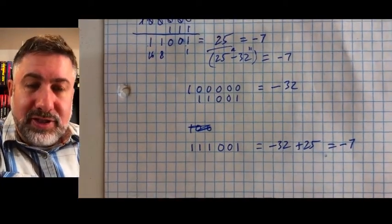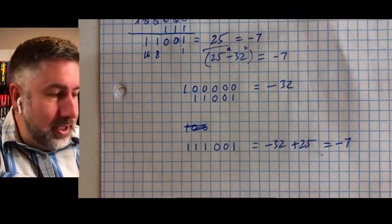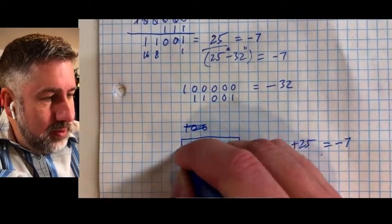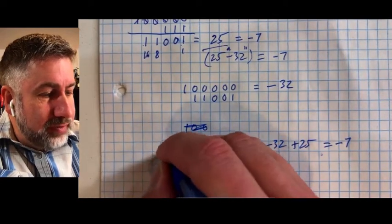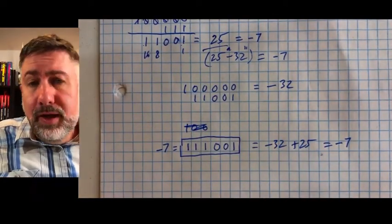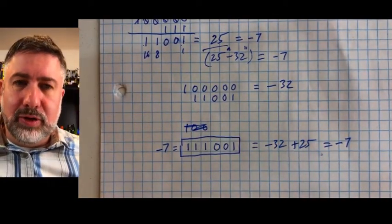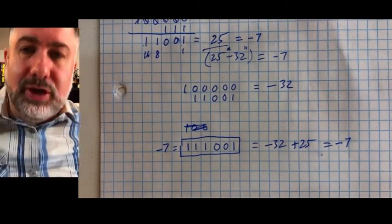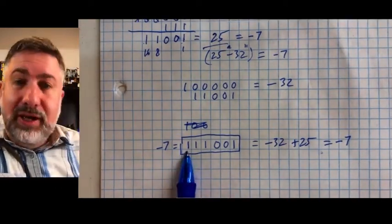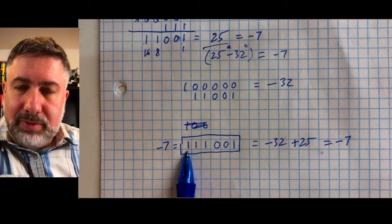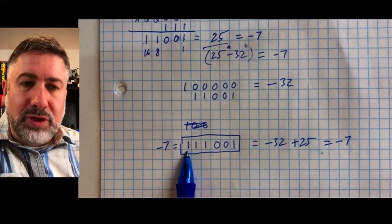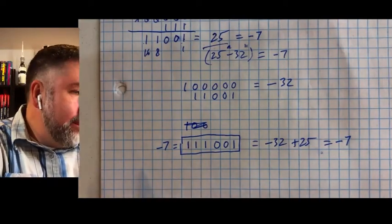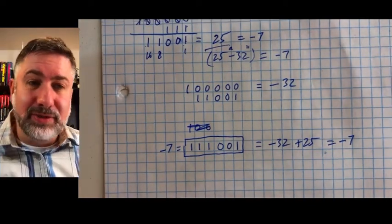That's how we're going to represent negative numbers now — this number is our result for negative 7. It seems like a lot of work and an odd way to do it, but putting a negative number into two's complement representation is going to give us some real interesting advantages, and we're going to look at those advantages in the next video.